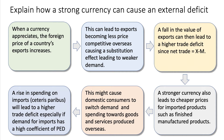Here's my second chain of reasoning: Explain how a strong currency can cause an external deficit. Define your terms. When a currency appreciates, the foreign price of a country's exports tends to go up — for example, the price of UK exports priced in euros or dollars goes up. And this can lead to exports becoming less price competitive overseas. The key thing is that if exports become more expensive in overseas markets, this causes a substitution effect leading to weaker export demand.